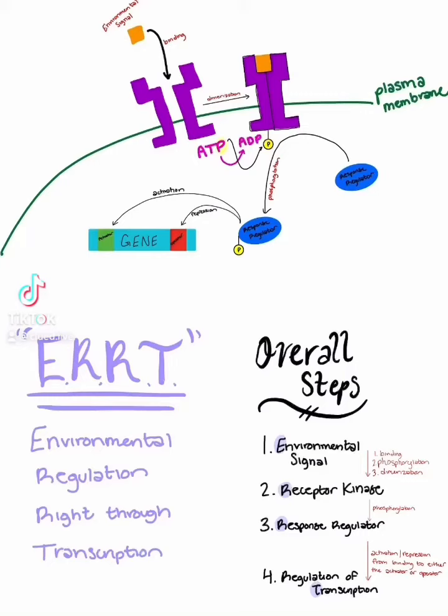Let's talk about receptor kinases. There are four overall main steps we can see in the diagram and in the list. An environmental signal binds to a receptor kinase, and in that binding the kinase dimerizes. A phosphorylation then occurs as the environmental signal binds to the kinase.